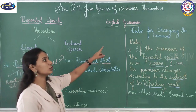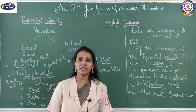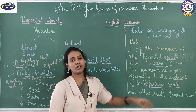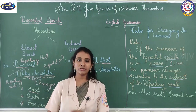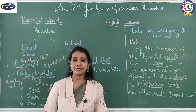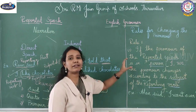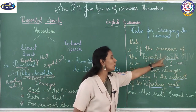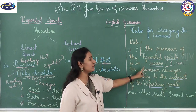So rules for changing the pronouns — we will go with the pronouns first and later move to tenses. All of you know what a pronoun is: he, she, it, I, you, we, they — all these are called pronouns. Regarding the pronouns, we have the following rules. The first rule is: if the pronoun of the reported speech is in the first person.